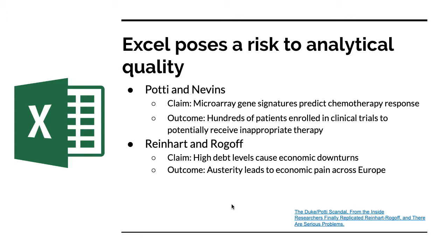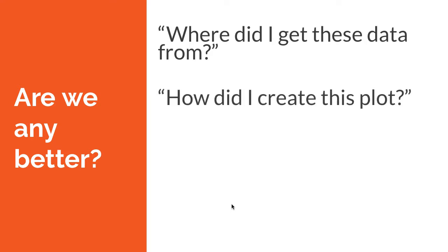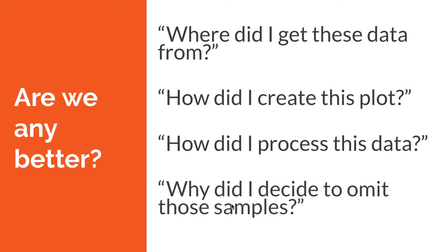These are well-known, publicized examples. But the question I'd like to ask, somewhat controversially, is: are we really immune from these kinds of issues? I'd say that the answer is probably no. Who hasn't been in a position when doing an analysis and asked themselves: where did I get these data from? How did I pull these data? If I wanted to get them again, would I be able to do it in the exact same way? How did I create this plot exactly? What were the steps that I took to come to this conclusion? How did I process the data — data often needs to be moved around a little bit before it's ready to be analyzed. Why did I decide to omit some of these outliers? What about them led to that, and am I doing it in a rigorous manner?